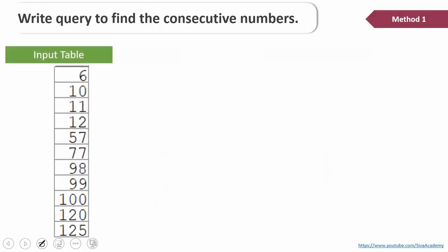Let me show you the logic I am going to follow so that it is easy for you to follow when I'm writing the SQL. In the first method, I'm going to compare the number with its previous number and with its next number. If a number is one greater than the previous number, or if the number is one less than the next number, then that is a continuous number. To compare it, I'm going to use the lead and lag analytical functions to get the previous number and the next number in the same row.